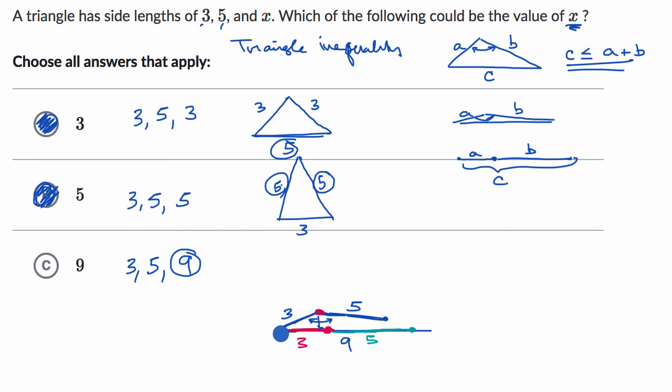But we can only go from this point to this point a total distance of eight. We can't get all the way to this other point, which is nine away from this original point.